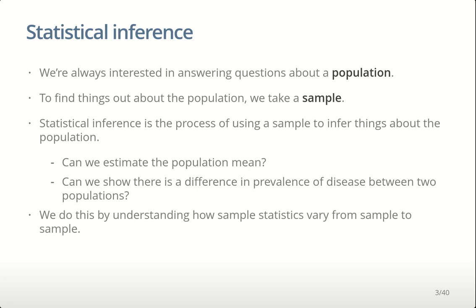A subset of the population is chosen to be in our sample, and statistical inference is the process of using that sample to infer things about the population. For example, can we estimate a characteristic of the population such as the population mean — maybe the average age or average income — or estimate the prevalence of a disease? We can estimate the prevalence in the sample and then use information about how samples vary between samples. If you take two different samples, what sort of difference are you going to get in the prevalence in each? Repeat that many times and you get a distribution of prevalences across samples.